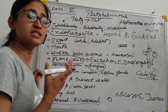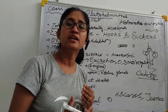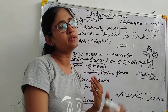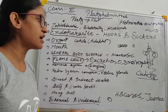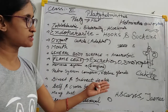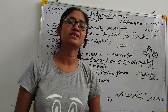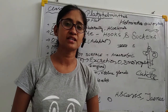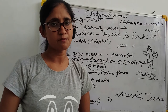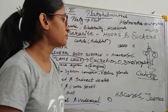As parasites, their life span involves more than one host — it can be 2 to 3 hosts. Examples include: Scaris, Taenia solium, and Fasciola hepatica.